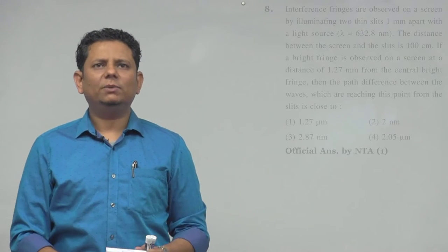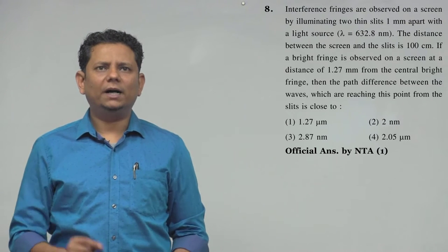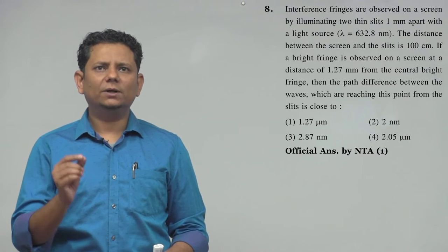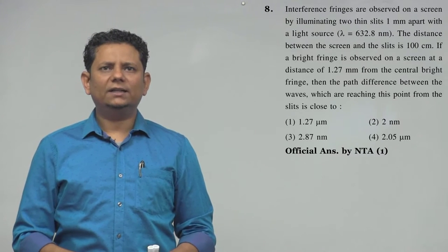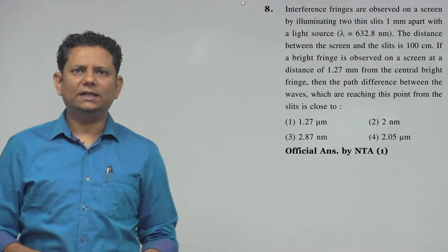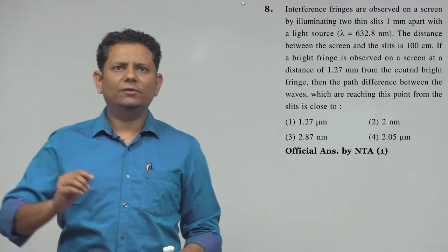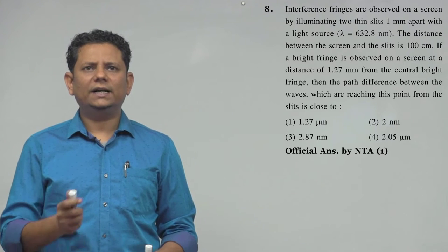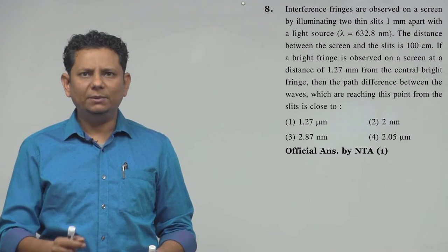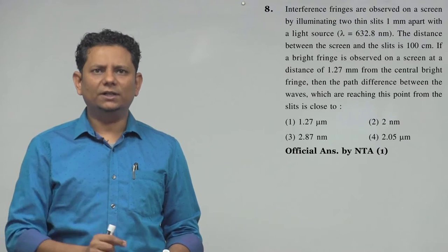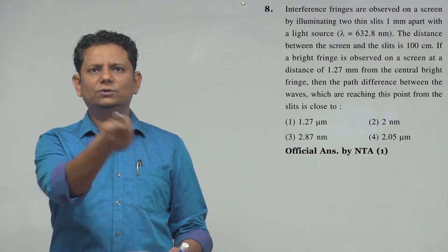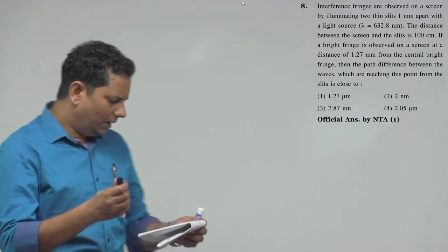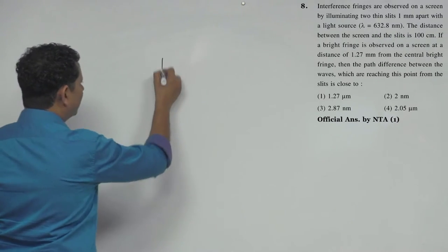Next question: Interference fringes are observed on a screen by illuminating two thin slits 1 mm apart with a light source, lambda is 632.8 nanometer. The distance between the screen and the slit is 100 centimeter, so capital D is 100 centimeter. If a bright fringe is observed on a screen at a distance of 1.27 millimeter from the central bright fringe, then the path difference between the waves which are reaching at this point from the slits is close to. Four options are given. Now, the scenario is like this - it's a YDSE setup.